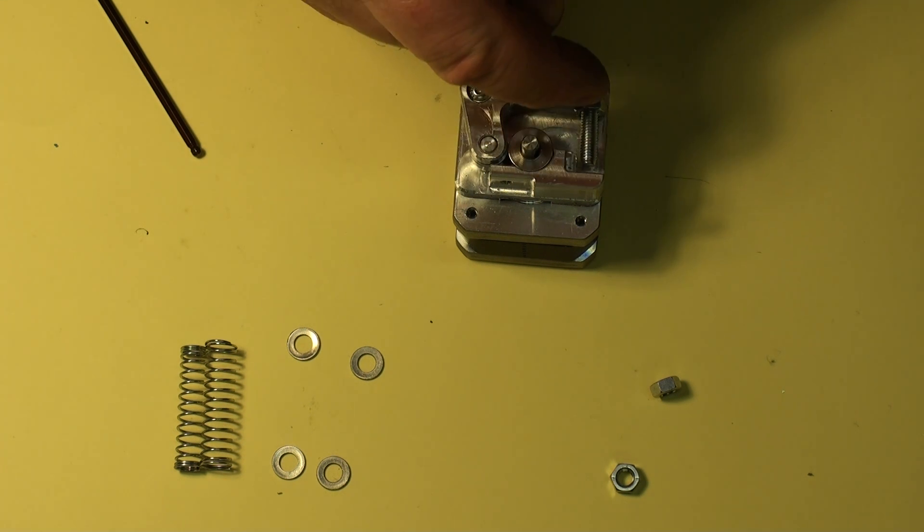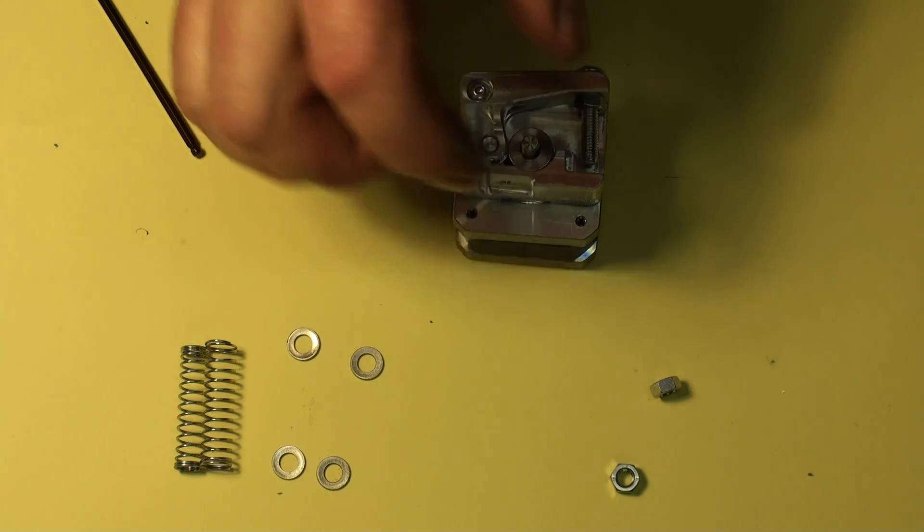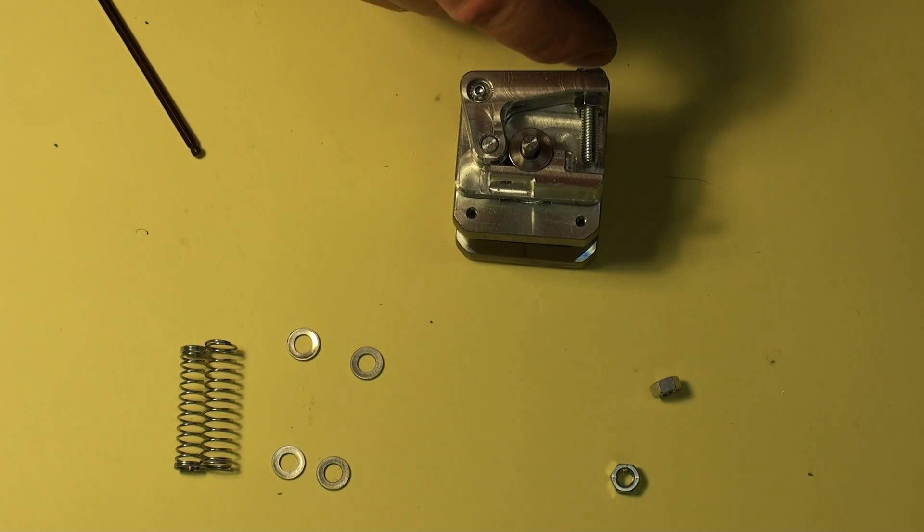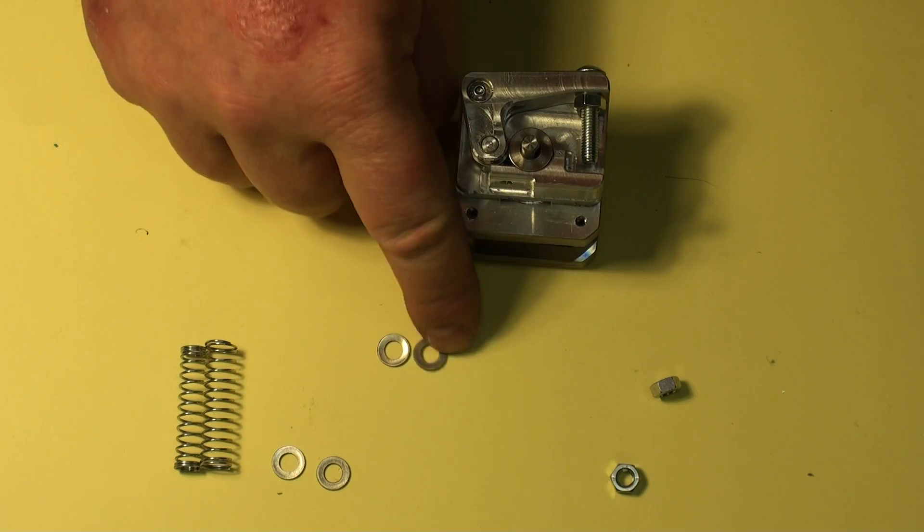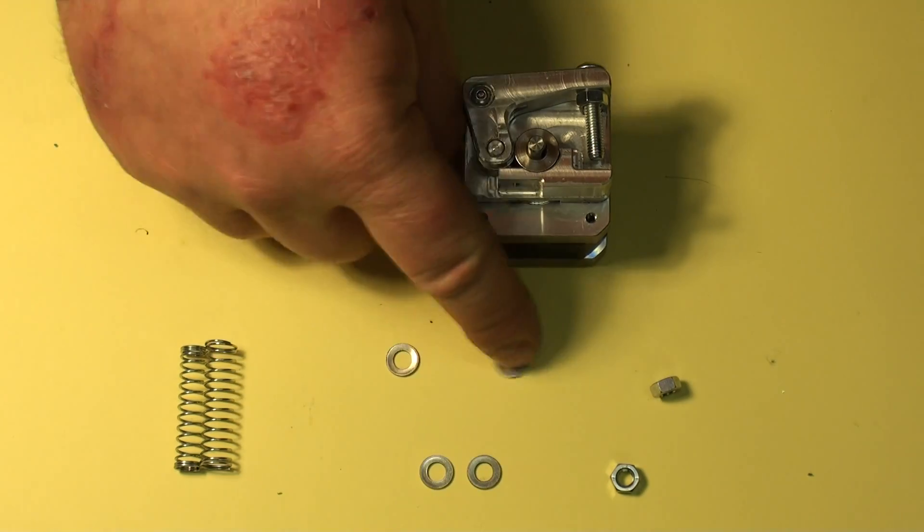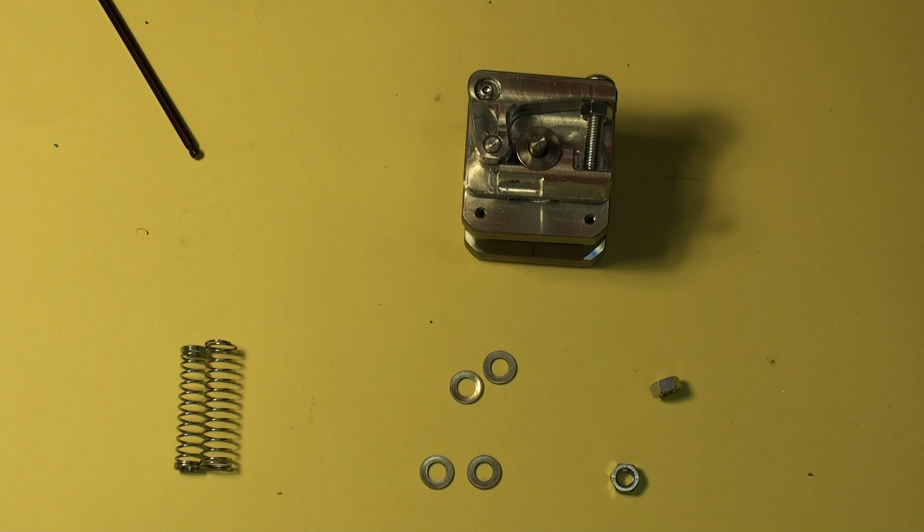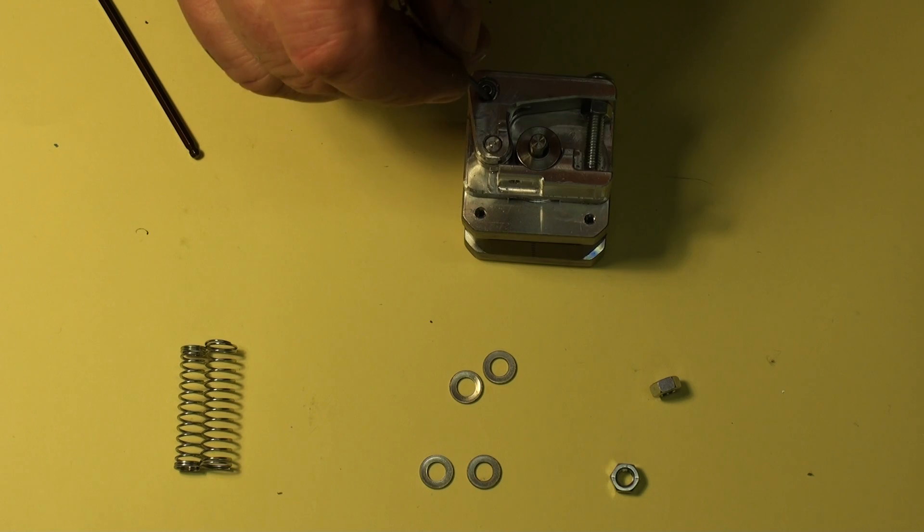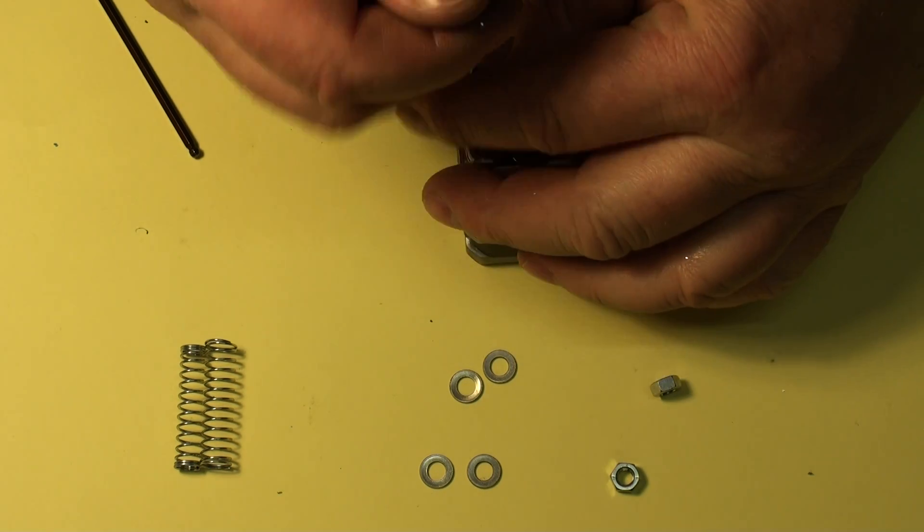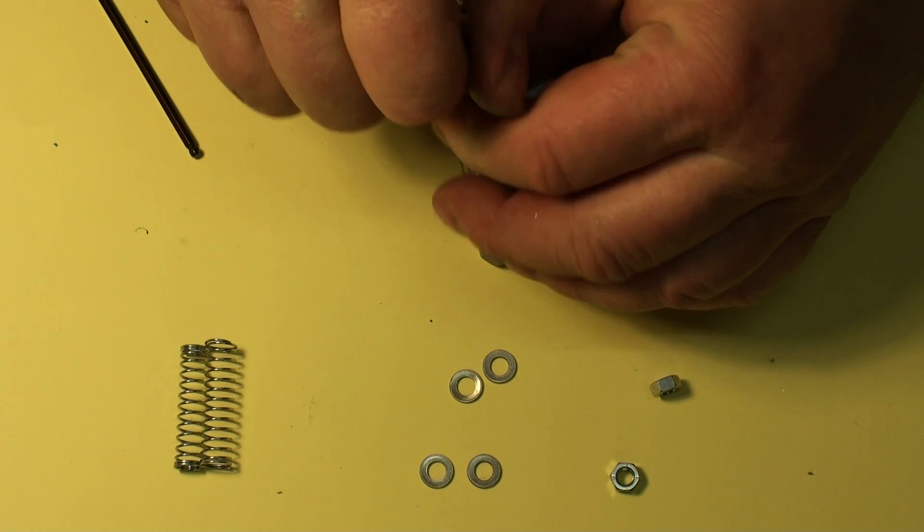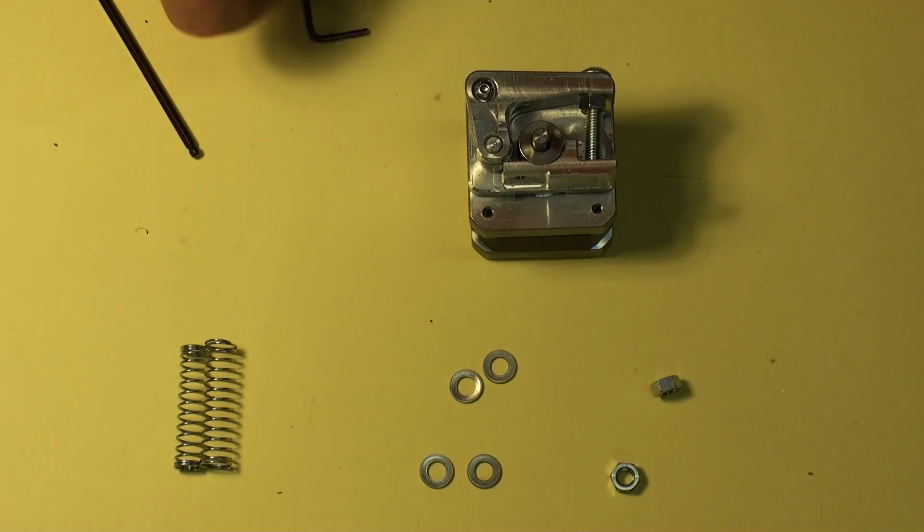Now we can also add more screws, more nuts if we wanted, to make the springs tighter. Or we could have washers at the back of the nut so that we're working in tiny little increments. So between the four washers and the extra nuts, you can crush that spring right down as far as you want.